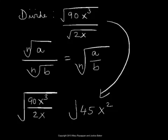And put that within the radical sign. So that's where we are now. The given problem has been simplified further to be square root of 45x squared.